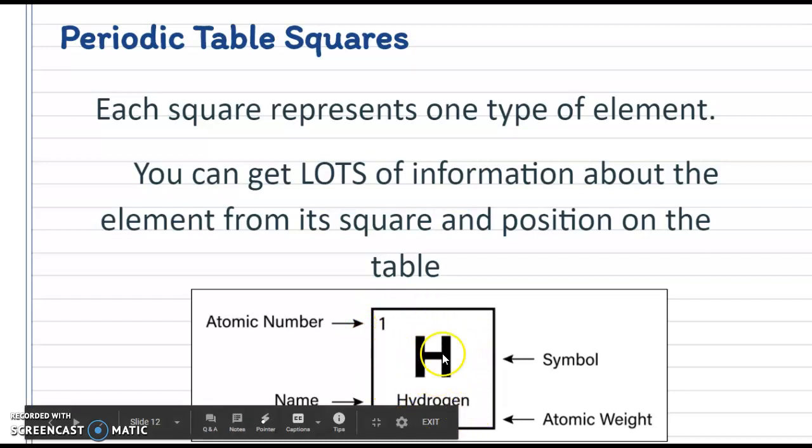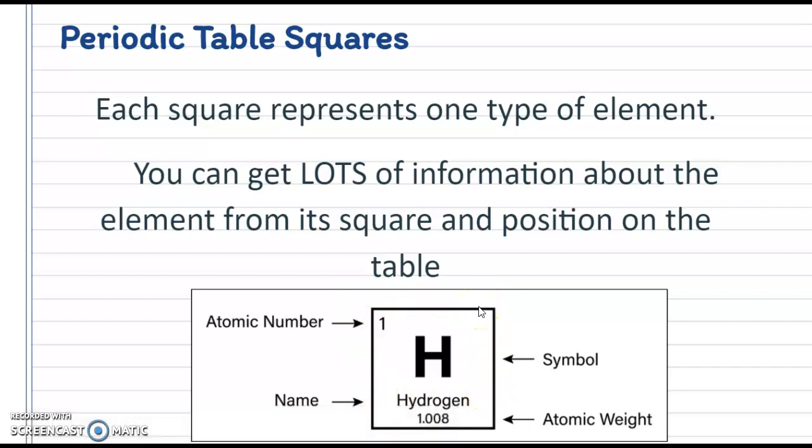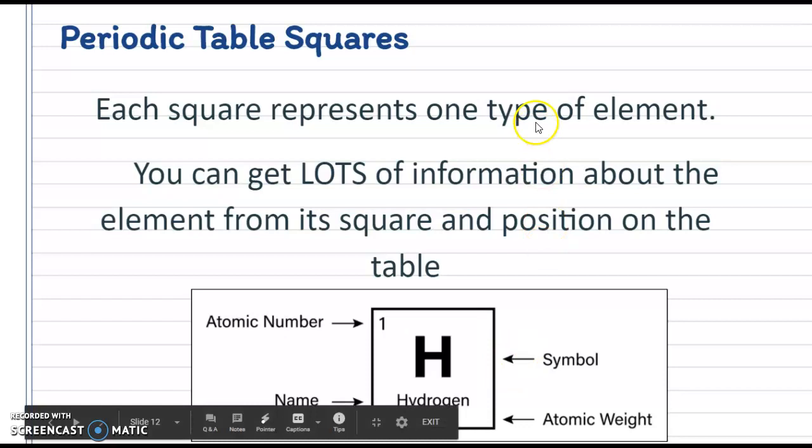But that is how we kind of read each square. So you can get a lot of information. Sometimes squares are even more complicated than that and they have even more information, but that's a basic look of how the square that represents that element looks. Oh yeah, there's our atomic weight.